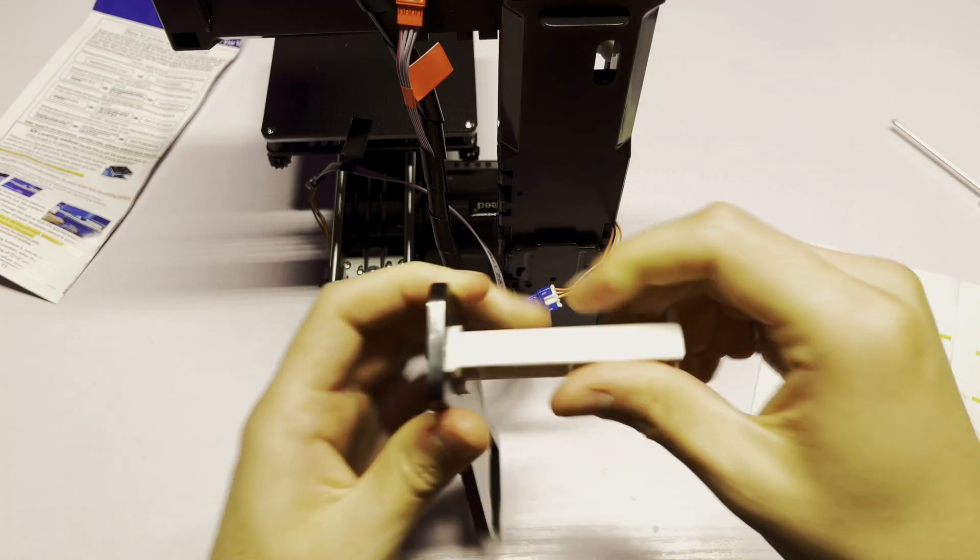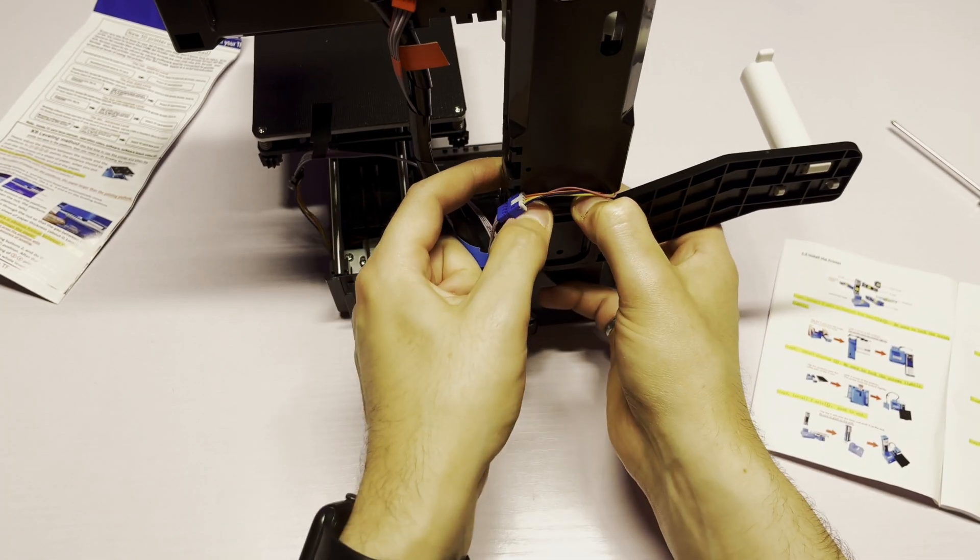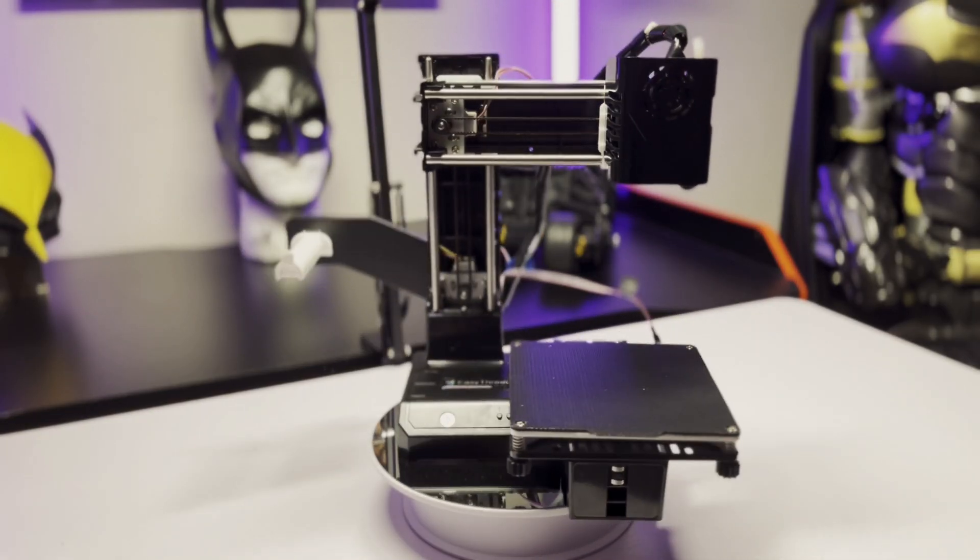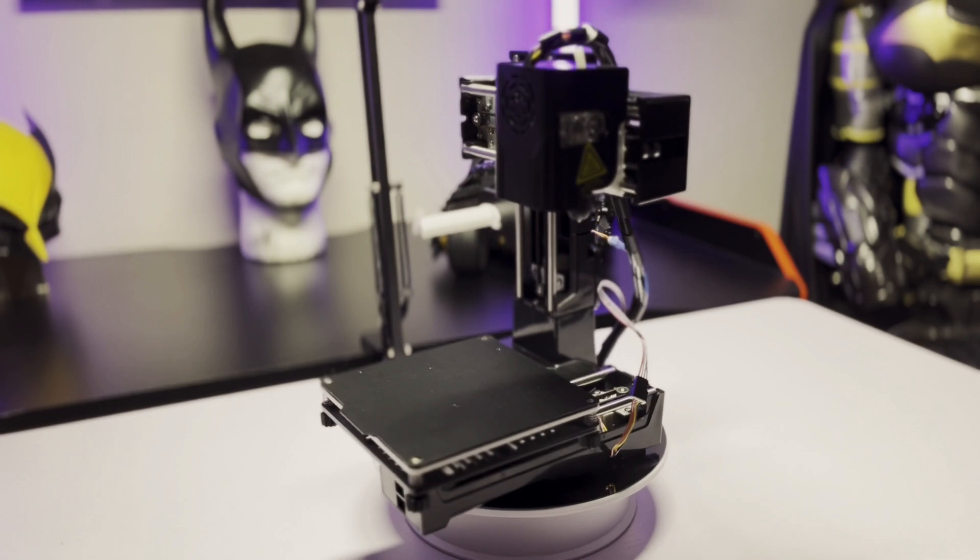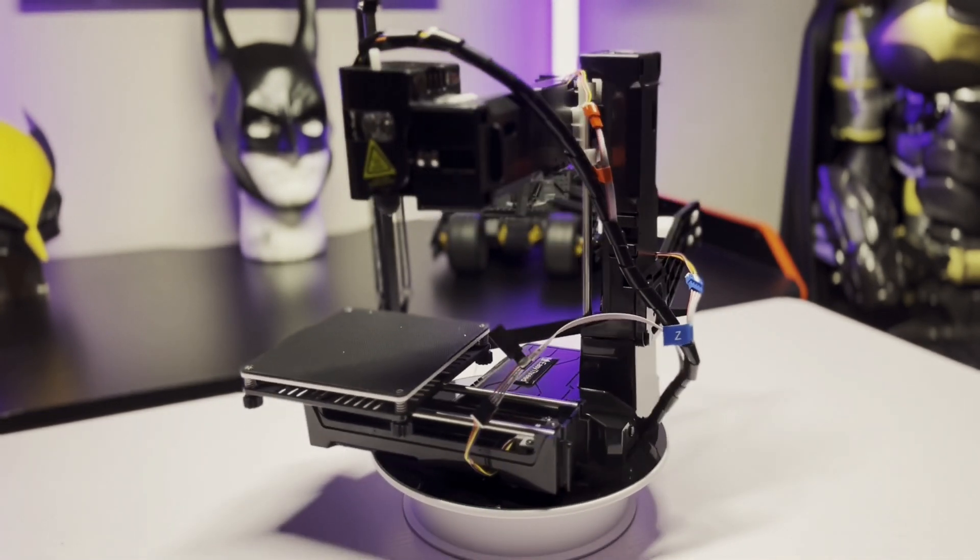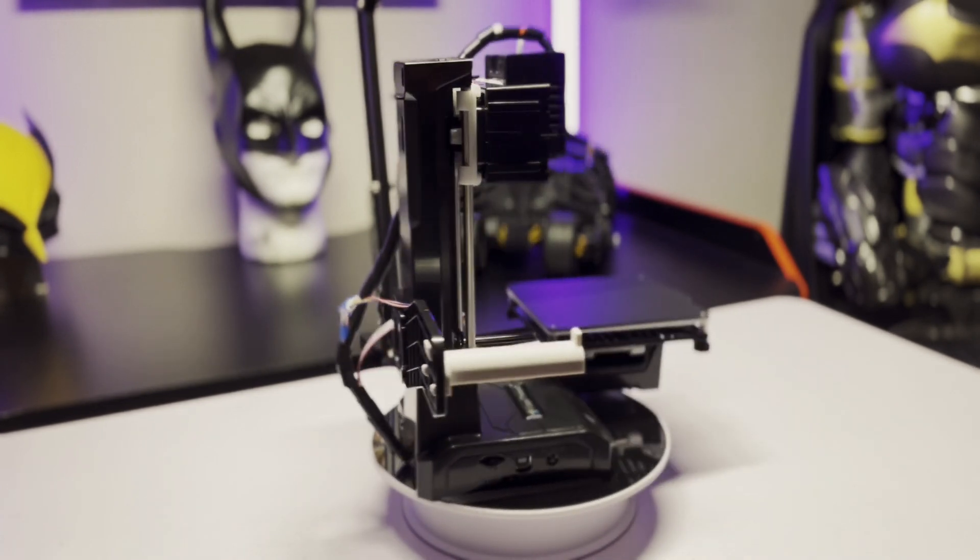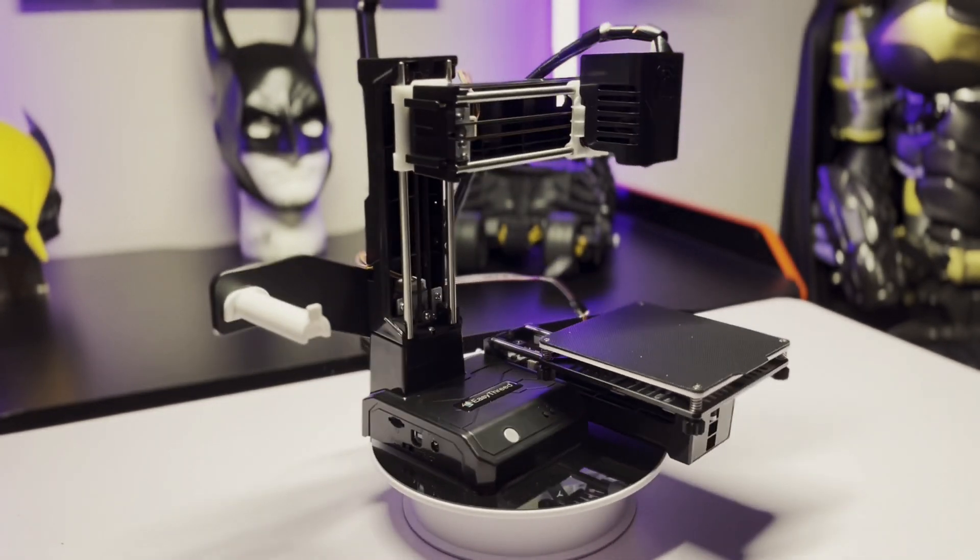And finally, the last step is to assemble and connect the filament holder. And that's it. It only took about seven steps to assemble the whole printer. The assembly process was overall super easy. Besides for the fact that if I didn't have a magnetic screwdriver, I would probably still be on step two.